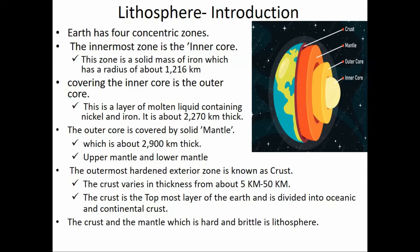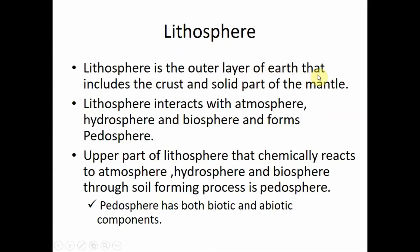The crust is the topmost layer of the earth and is divided into two: oceanic crust and continental crust. Oceanic crust consists of oceans and deep valleys below the ocean floor, while continental crust consists of mountain ranges and huge plains. Both the crust and mantle are hard and brittle, and together this is the lithosphere. So lithosphere is the outer layer of the earth that includes the crust and the solid part of the mantle.